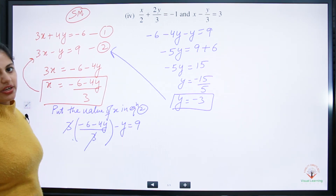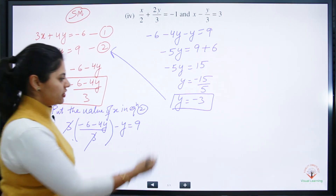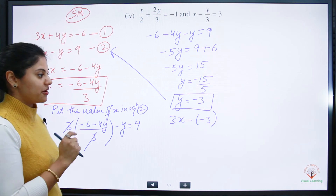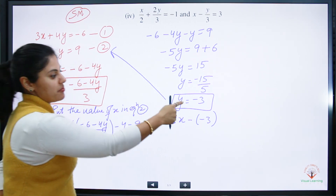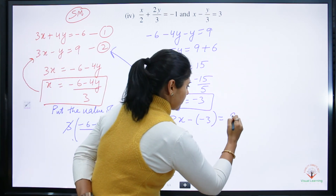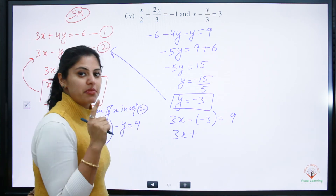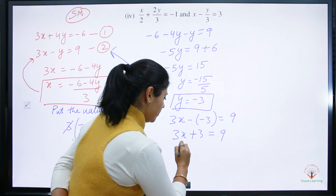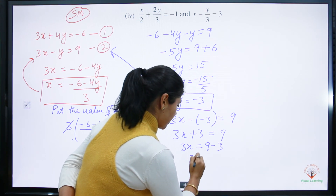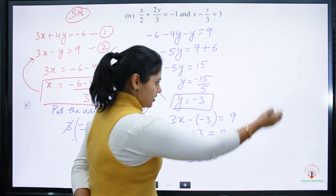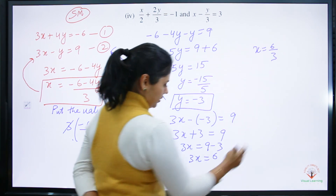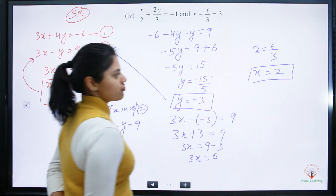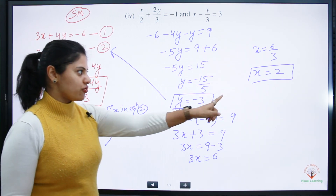Now put y equals minus 3 into equation 2: 3x minus (minus 3) equals 9. Remember, minus times minus is plus, so 3x plus 3 equals 9. Therefore 3x equals 9 minus 3 equals 6, and x equals 6 divided by 3, which gives x equals 2. So by the substitution method, x equals 2 and y equals minus 3.